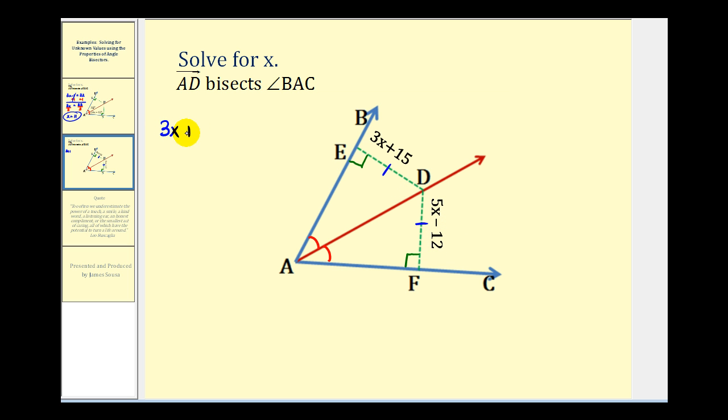We have three x plus 15 equals five x minus 12. If we're going to solve for x, we need to have x on one side of the equation. Let's subtract five x on both sides of the equation.